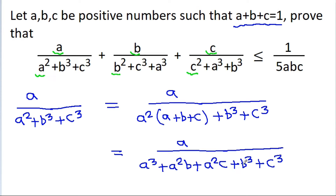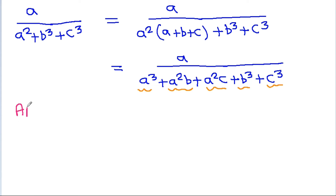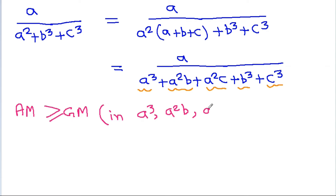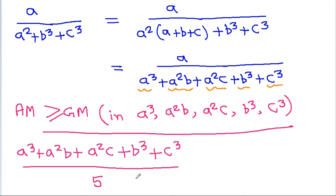One more thing that we can notice is in the denominator we have five terms: one, two, three, four, and five. So if we use AM-GM on these five terms — a³, a²b, a²c, b³, and c³ — then the AM will be (a³ + a²b + a²c + b³ + c³)/5, which should be greater than or equal to the GM, which is (a³ · a²b · a²c · b³ · c³)^(1/5), giving (a⁷ · b⁴ · c⁴)^(1/5).